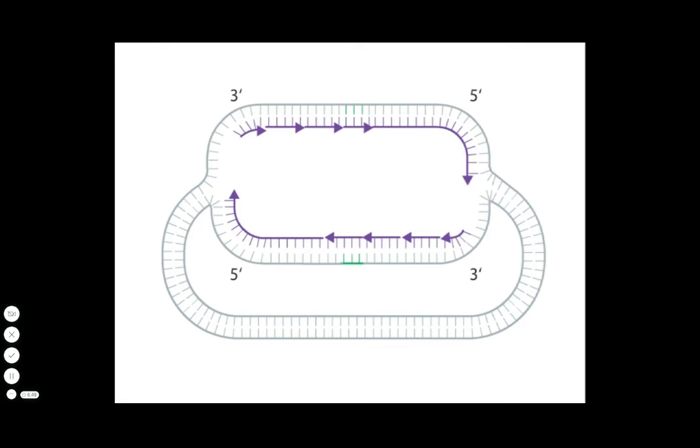Because DNA polymerase can add nucleotides only in the 5' to 3' direction, the leading strand grows continuously in the direction of the replication fork, but the lagging strand can grow only in short segments as the parental DNA molecule unzips.